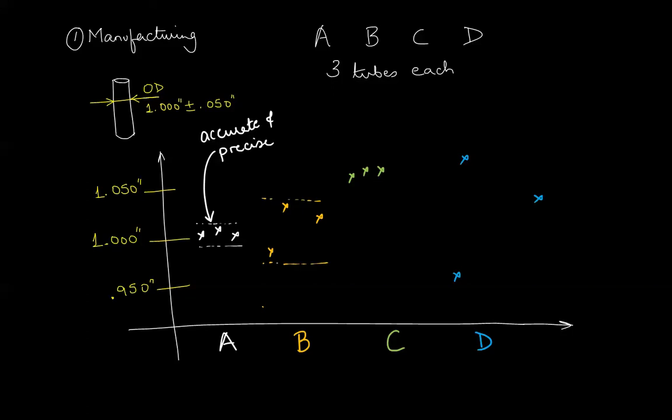Company B is close to the target. It is inside the tolerance range except their tubes are not close to each other in terms of their OD. Company B therefore is accurate but not precise.